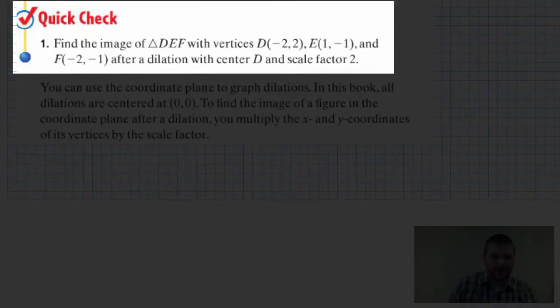Quick check number one: find the image of triangle DEF with vertices D at (-2, 2), E at (1, -1), and F at (-2, -1) after a dilation with center D and a scale factor of 2.